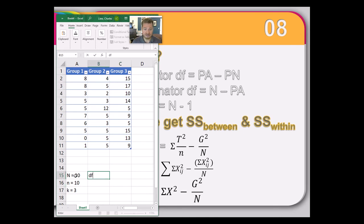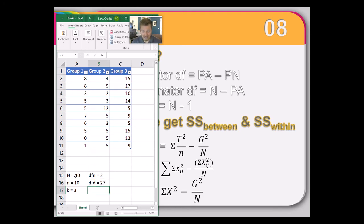We're going to have an F-test with 2 and 27 degrees of freedom. You always write the numerator first and then the denominator — top to bottom, left to right. That establishes our degrees of freedom. Now, for the sum of squares terms: one nice truth is that sum of squares between plus sum of squares within must equal sum of squares total. Once you find two of the three, you can always solve for the last by simple subtraction or addition.